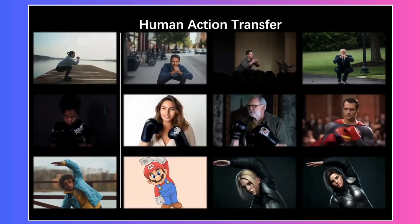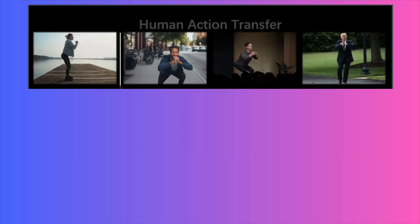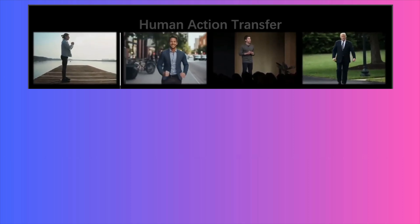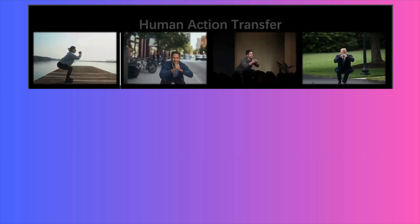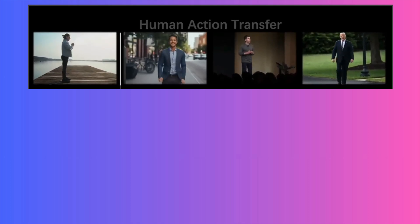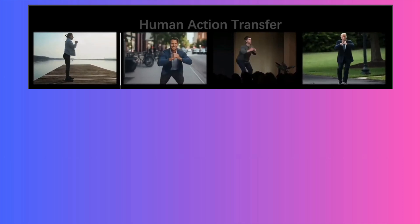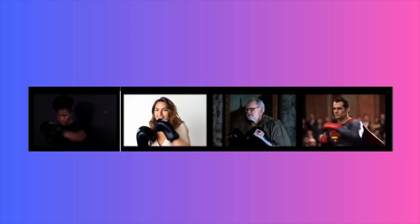Here's where it gets really fun. Check out this first row of examples. We have a video of a woman doing a simple squat. Imagine taking a photo of Sam Altman giving a speech, plugging it into FlexiAct, and just like that, you can make him do a perfect squat instead. You can do the same thing with a picture of Trump, or anyone else. Or look at the middle row with this woman boxing — you can transfer those sharp, quick movements onto any character you want, all from a single photo.